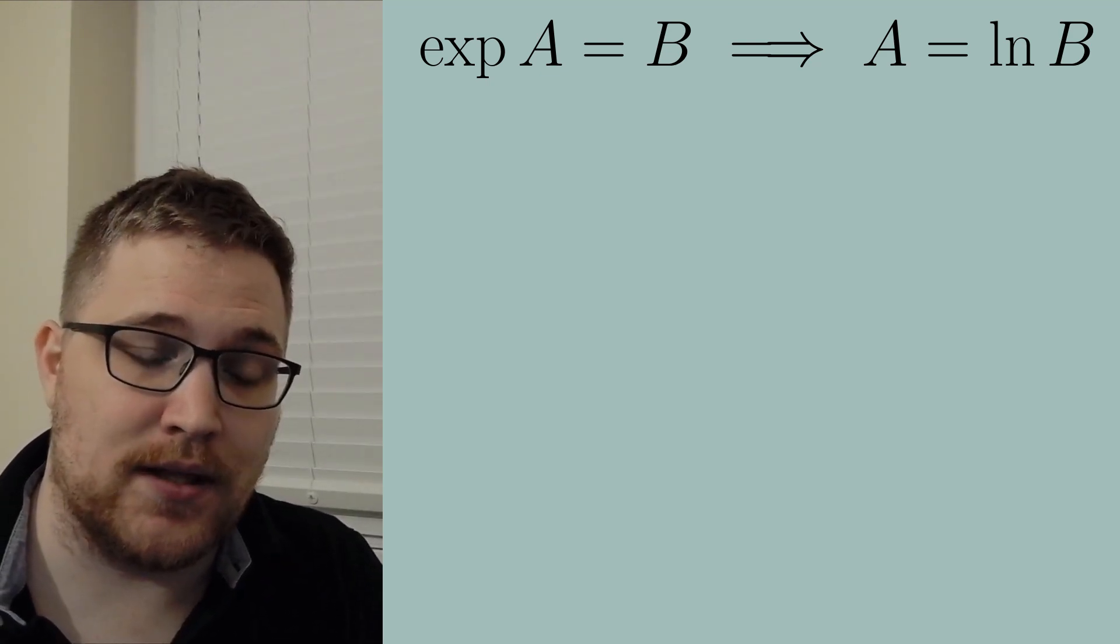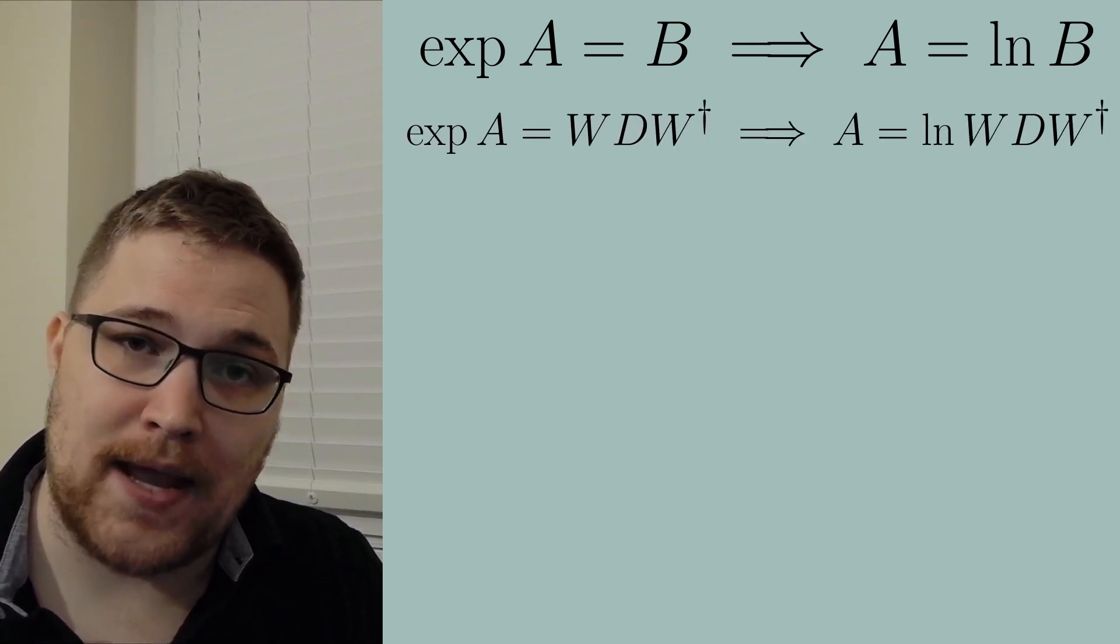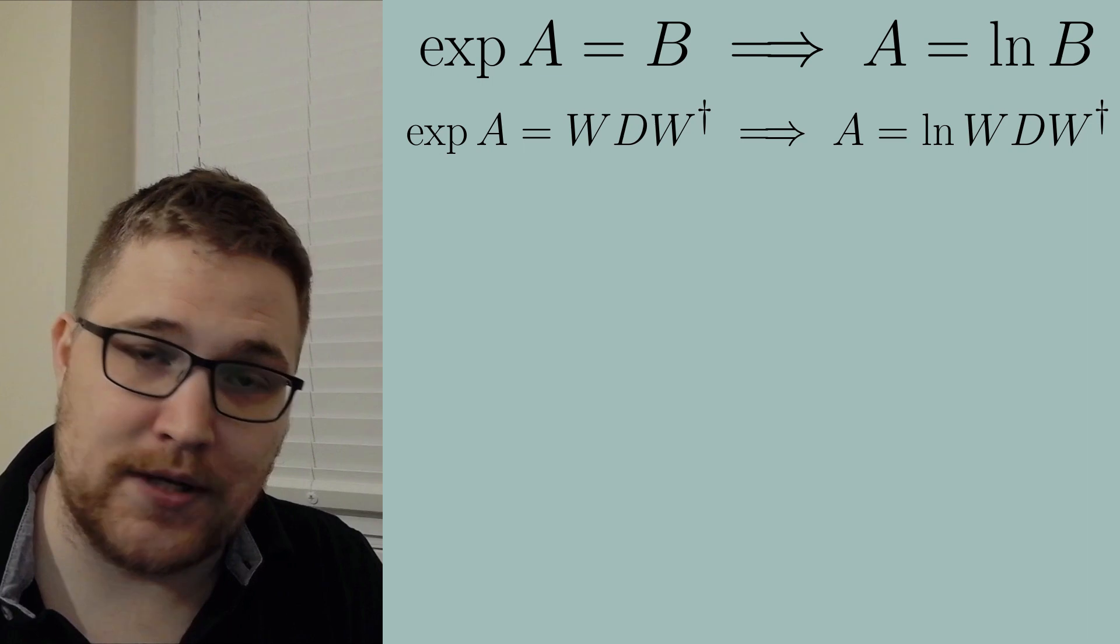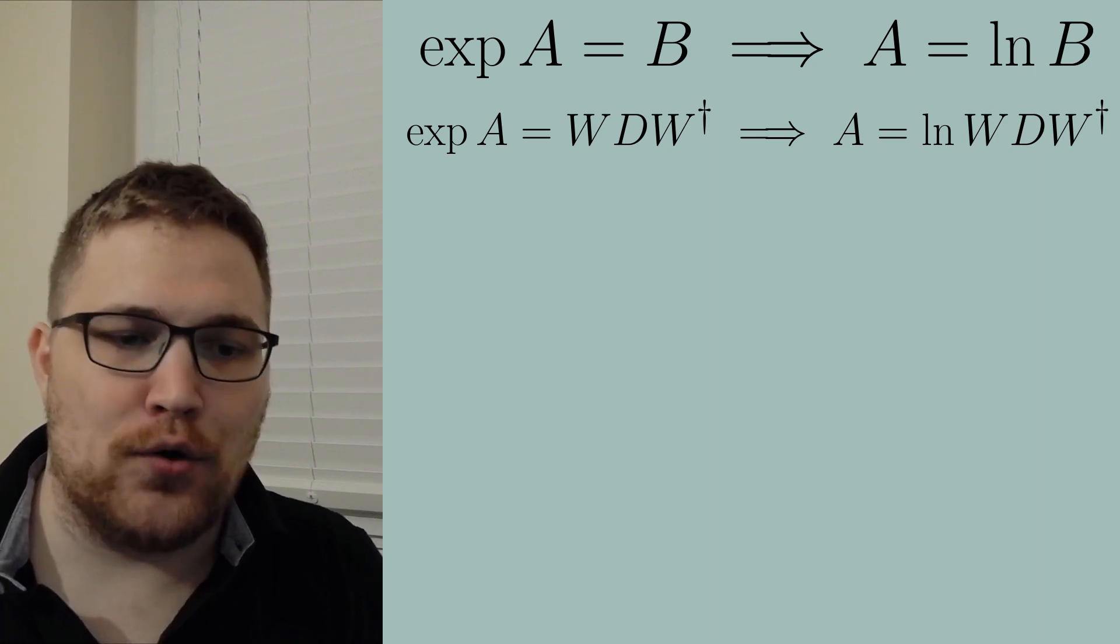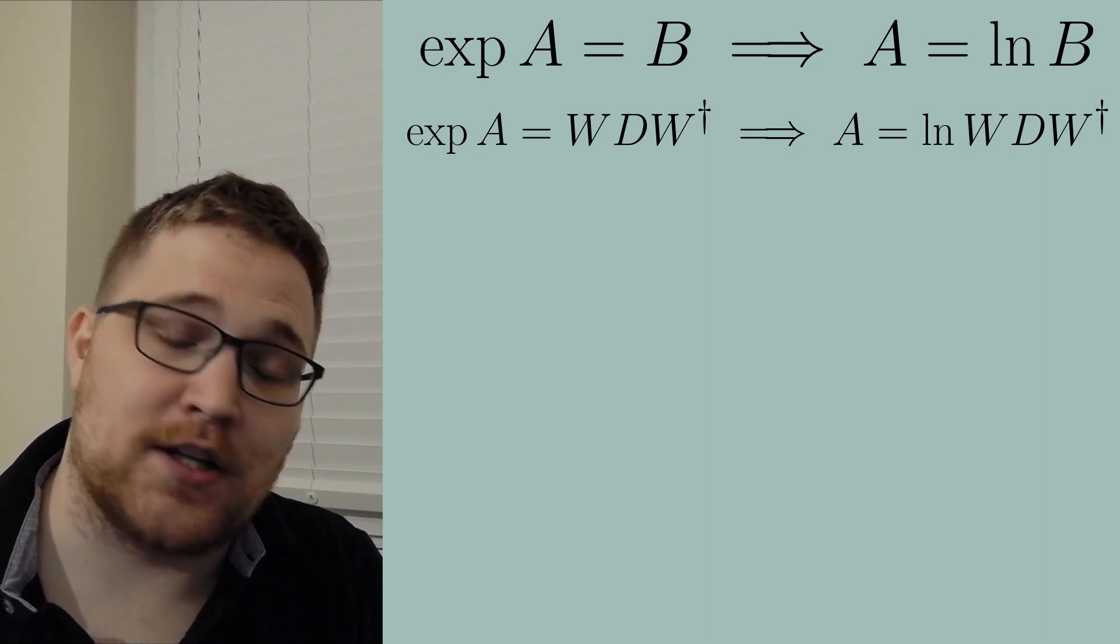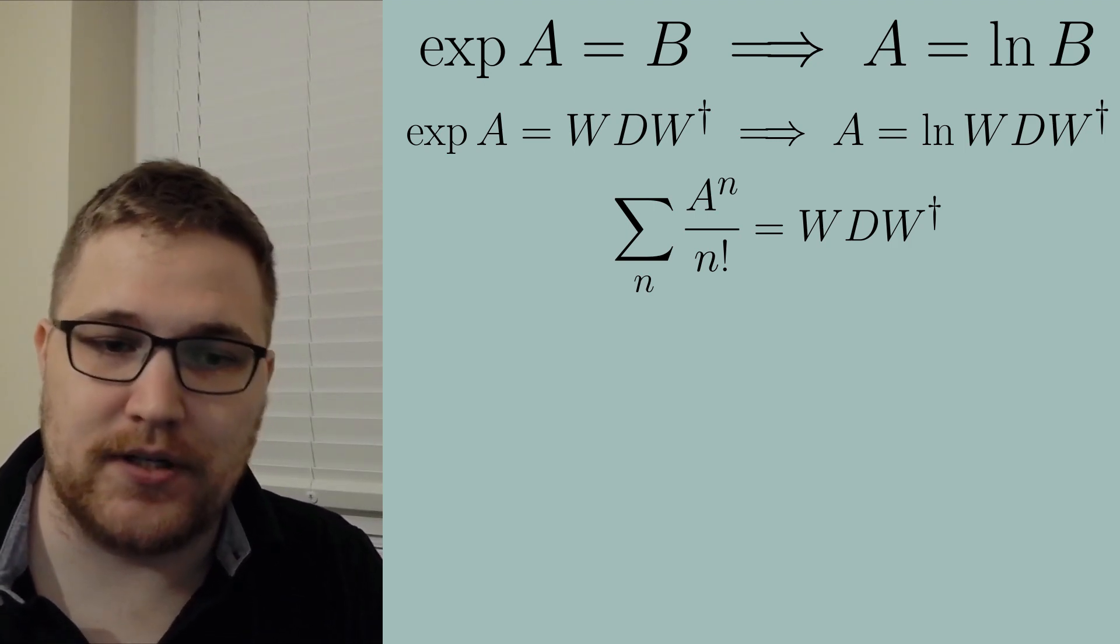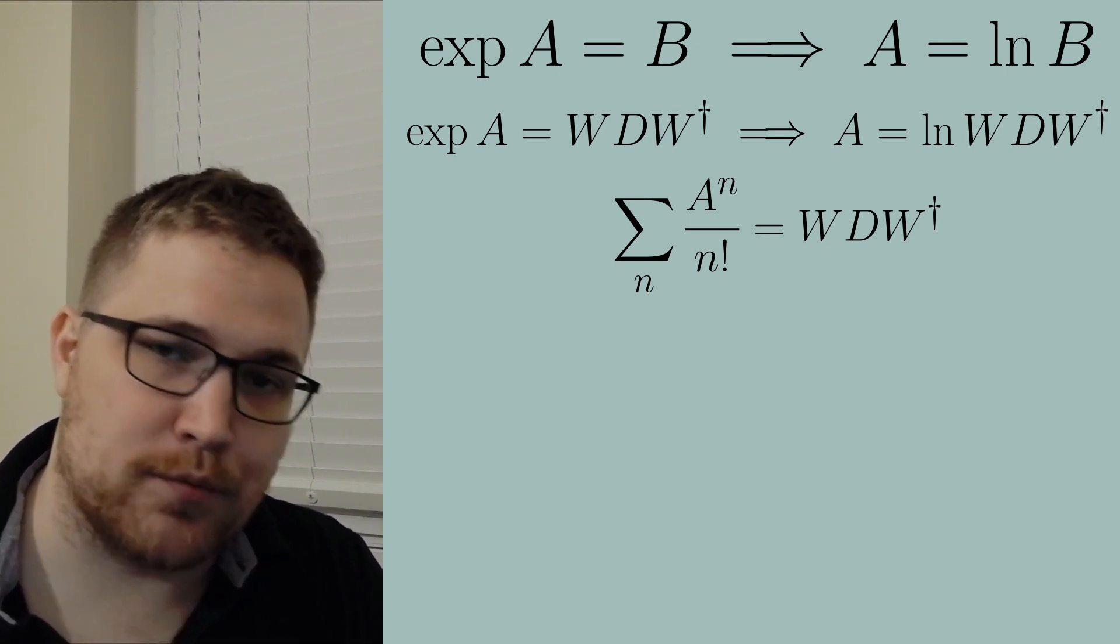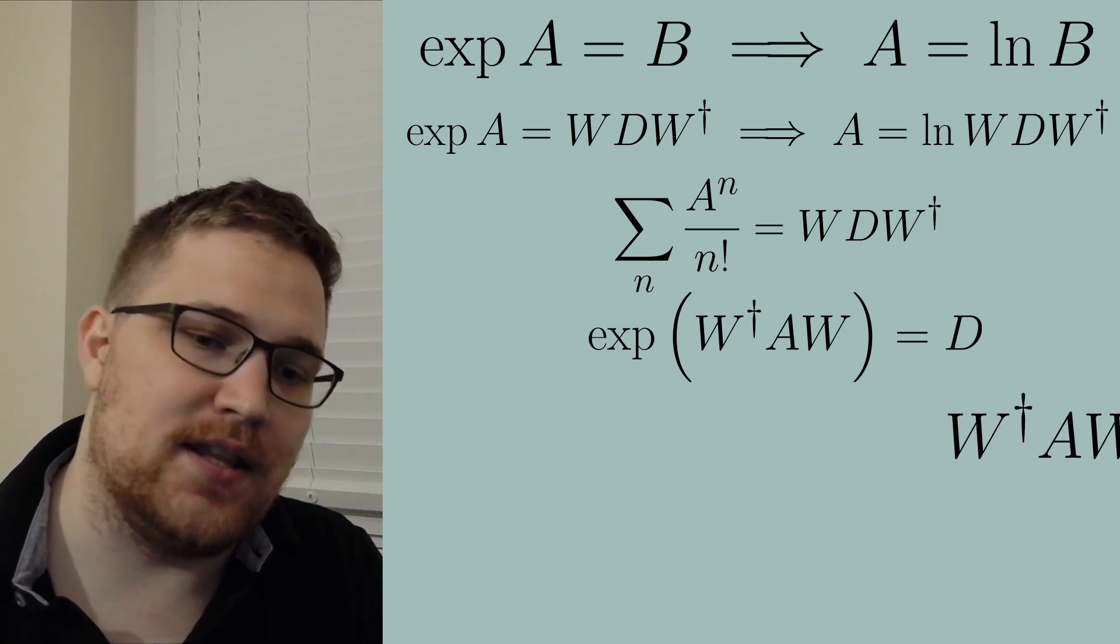So rewriting this we get the exponential function of A is equal to W a unitary matrix times D a diagonal matrix times W dagger which then tells you that A is equal to the logarithm of again that expression. Now using the series definition of the matrix exponential we can write out our matrix exponential in the following way. Reorganizing this expression by taking the unitary matrices to the left hand side and then evaluating the series again gives us the following expression which then by the definition of the logarithm of our matrix we get the following expression.